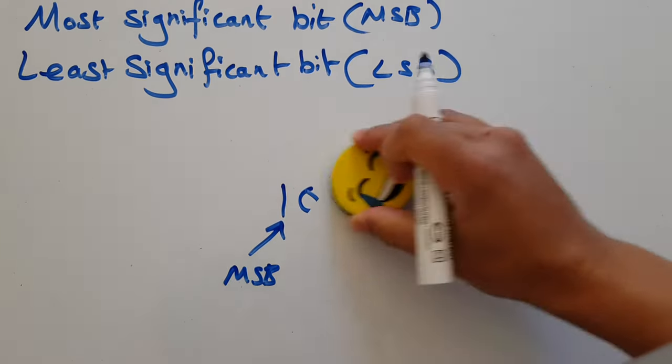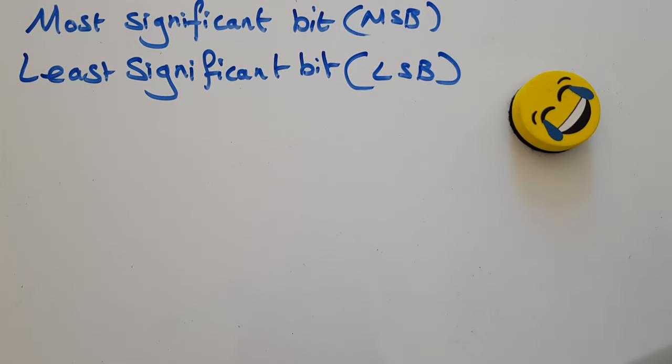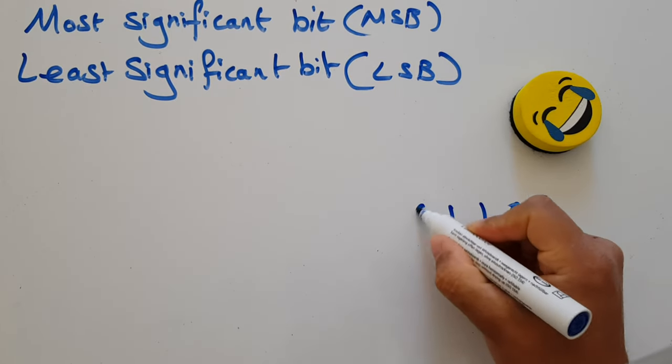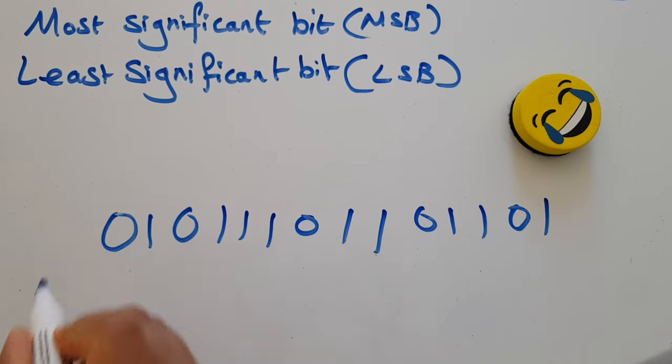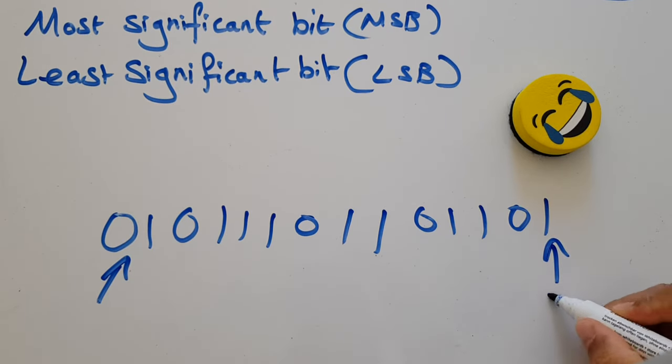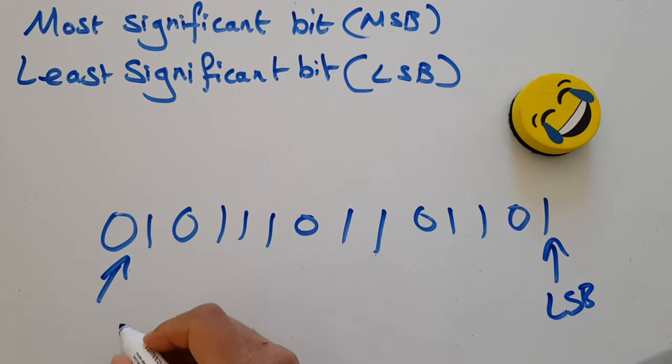Wait, does this work if I go beyond 8 bits? 1, 0, 1, 1, 0, 1, 1, 0, 1, 0, 1, 0. What's my most significant bit? What's that one? Where's my least significant bit? And it's that one.